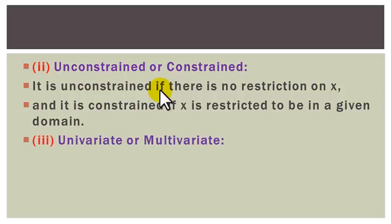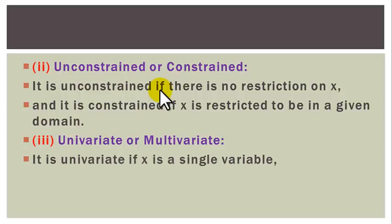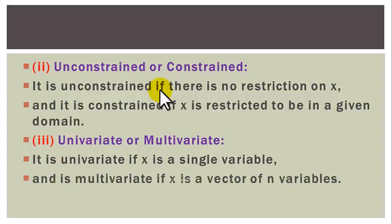Three: we also classify optimization problems as univariate or multivariate. It is classified as univariate if x is a single variable, and it is classified as multivariate if x is a vector of n variables where n is greater than 1.